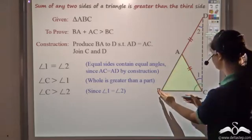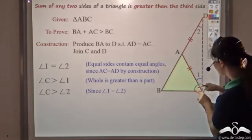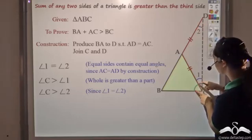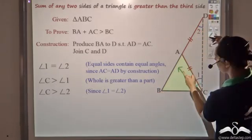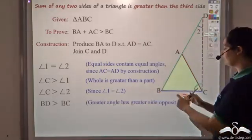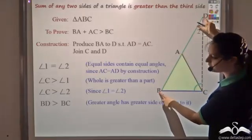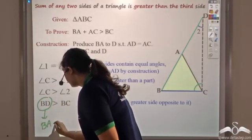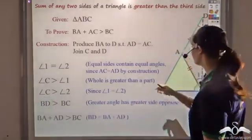Now look at the bigger triangle BDC. It has three angles: angle B, angle 2, and angle C. Since angle C is greater than angle 2, the side opposite to angle C, which is BD, is greater than the side opposite to angle 2, which is BC. So BD is greater than BC. Now BD equals BA plus AD.